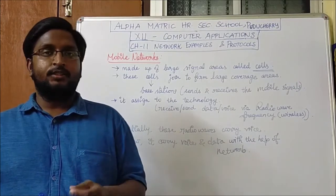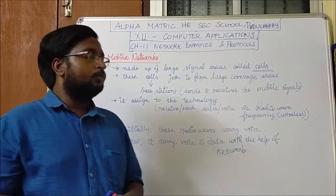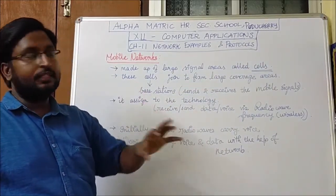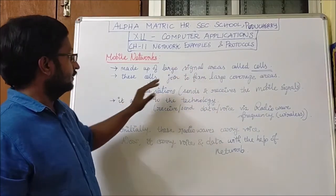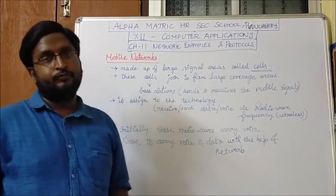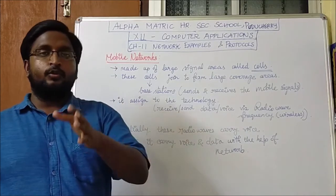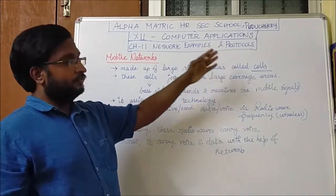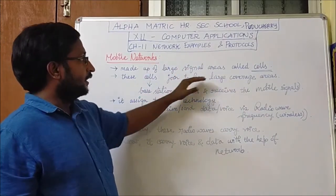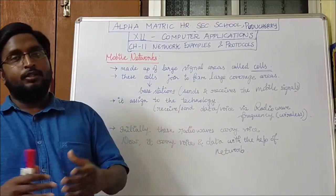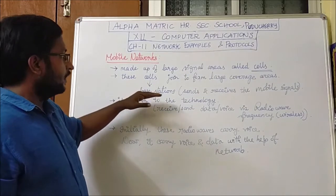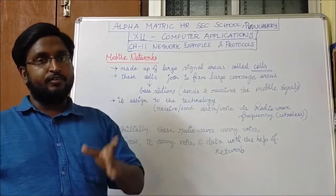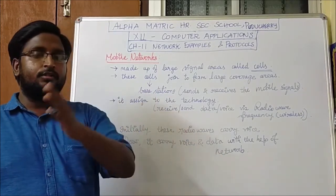The mobile is a device which is connected with the help of wireless technology. The mobile network is made up of large signal areas called cells. Each cell is identified as a signal area, and those cells join to form a large coverage area. This signal area is directly proportional to the number of users in a particular region. Each cell will have a base station, which sends and receives mobile signals from one coverage area to the next.